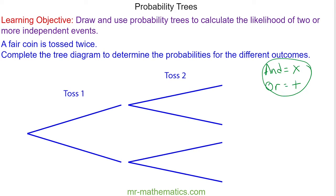A fair coin is tossed twice. Complete the tree diagram to determine the probabilities for the different outcomes. When you toss a coin you can have a head or a tail. The probability of getting a head is one outcome out of two, and the same for a tail. Independent of what you get on the first toss, you can have the same outcomes with the same probabilities on the second toss, so again each of these will be one half.